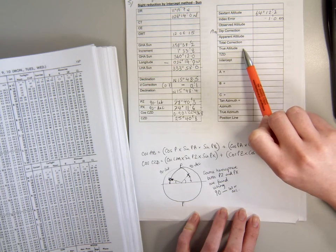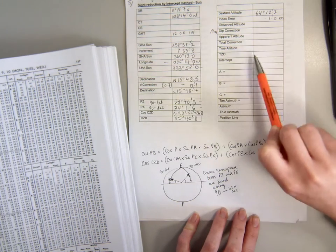So the next step is going to be correcting our sextant altitude to true.